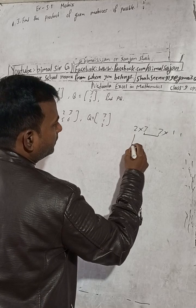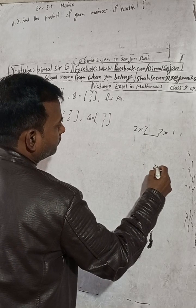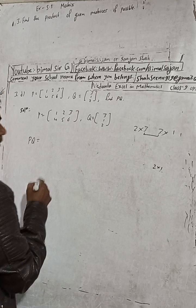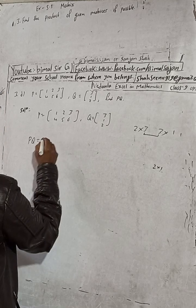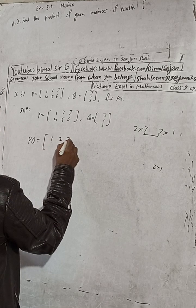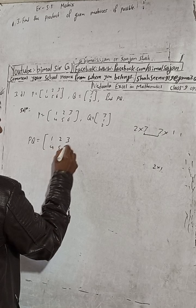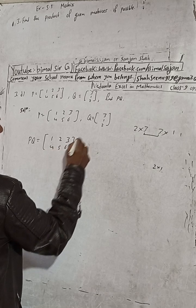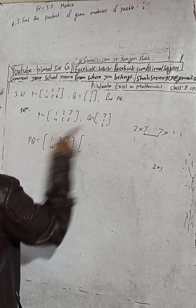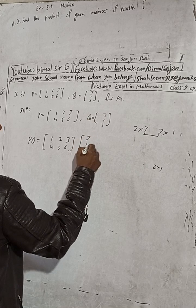The result will be a two-into-one matrix. So here we write P's values: 1, 2, 3, 4, 5, 6 and Q's values: 3, 1, 2.